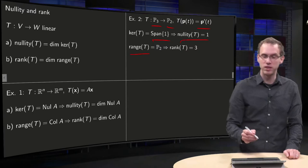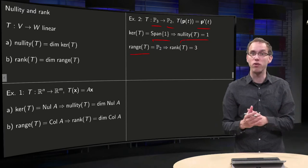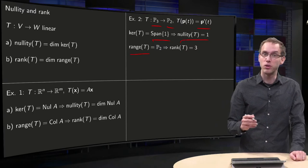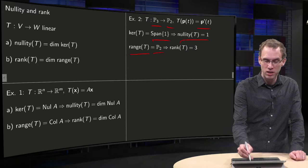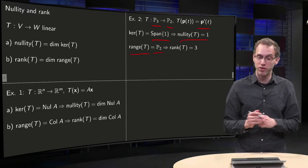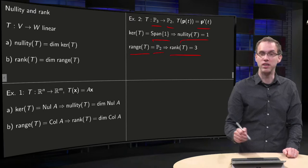And what about the range of T? You can reach all vectors in P2, so your range equals your co-domain in this case. P2 has a dimension of three, so the rank of T equals three.